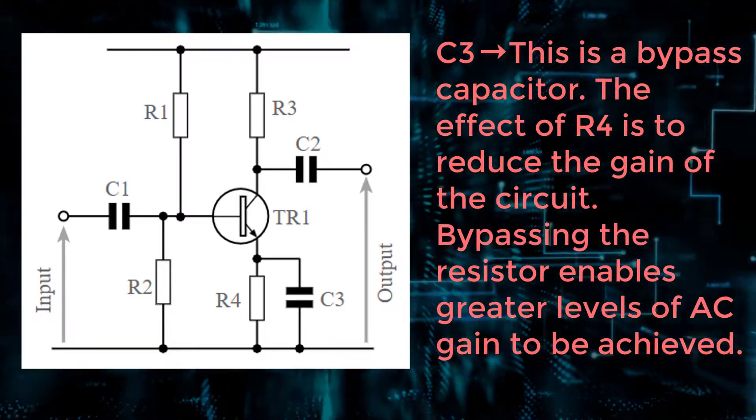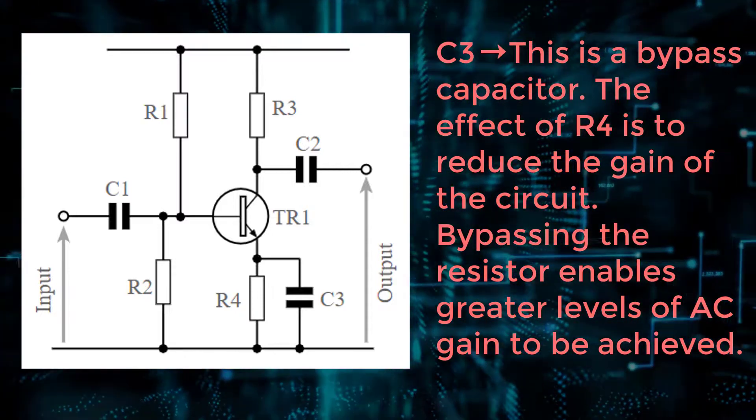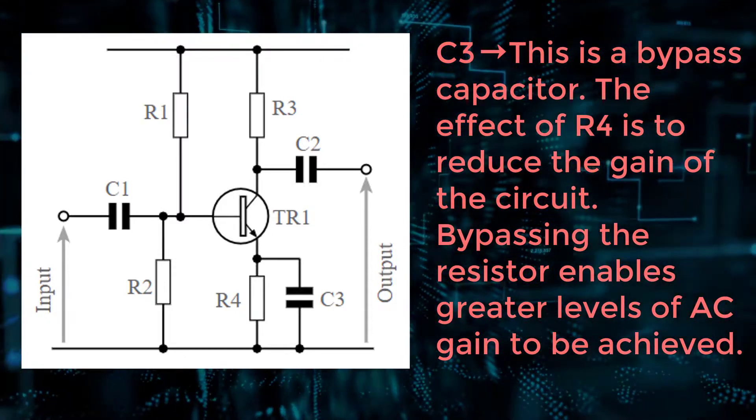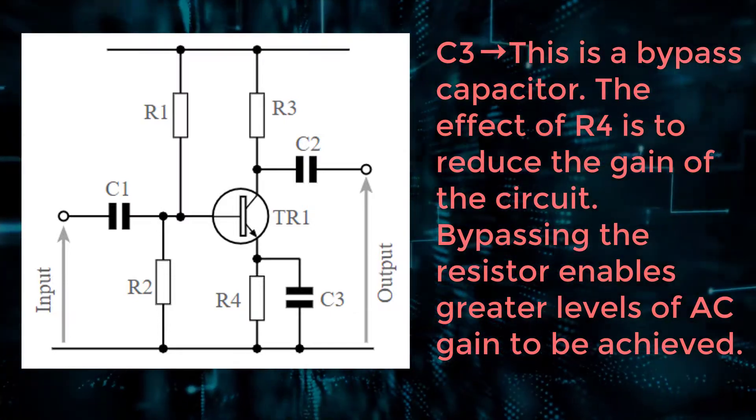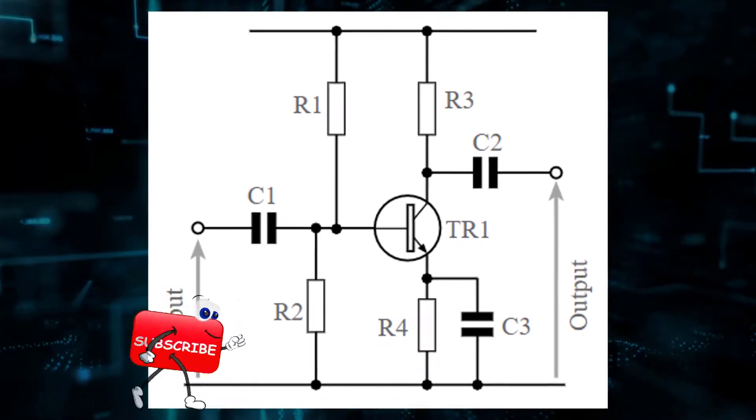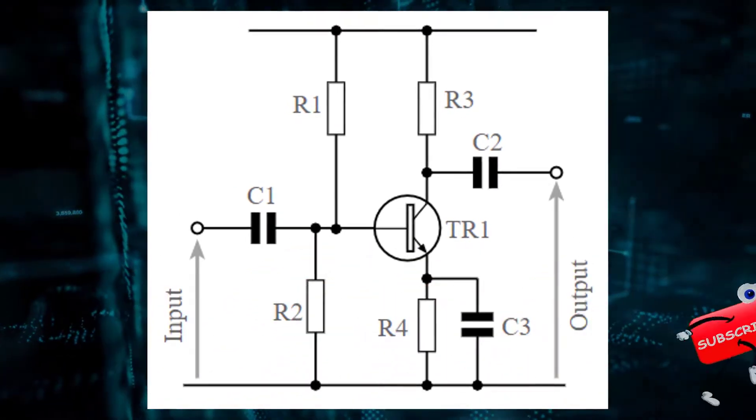C3, this is a bypass capacitor. The effect of R4 is to reduce the gain of the circuit. Bypassing the resistor enables greater levels of AC gain to be achieved. The circuit shown here is that of a basic AC coupled Common Emitter Amplifier.